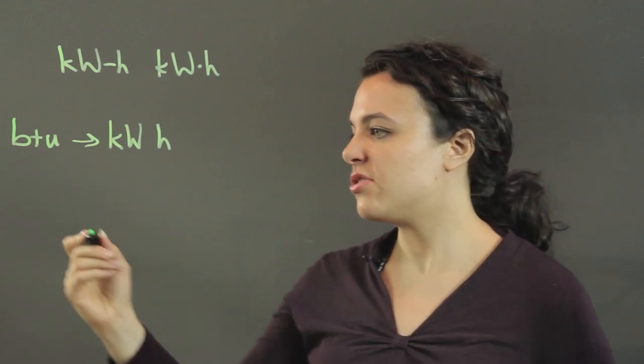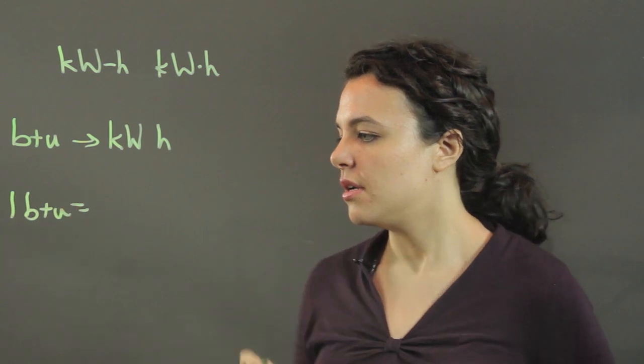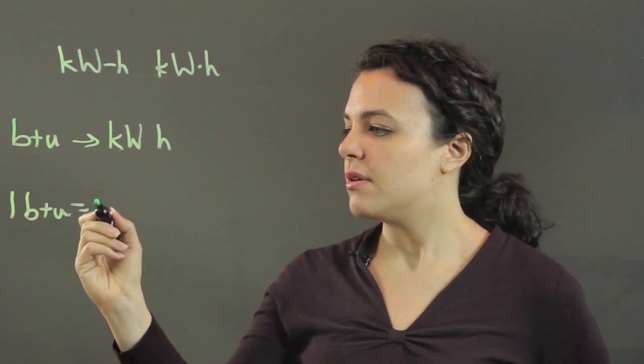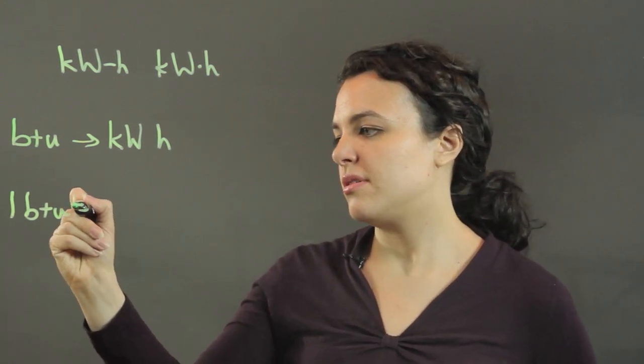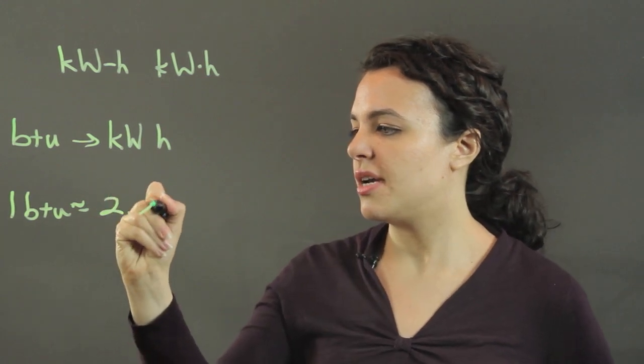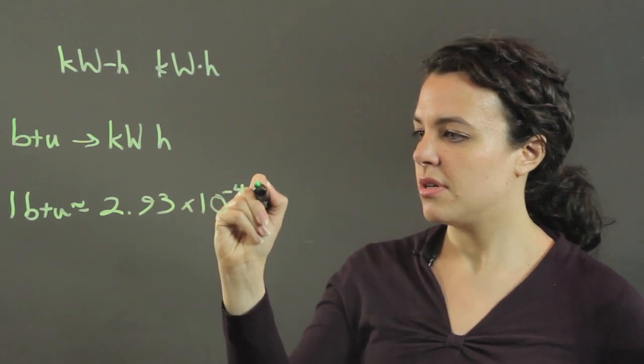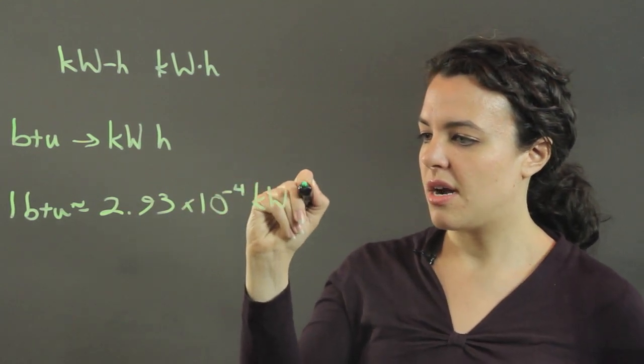So we've got two units of energy, and one British thermal unit equals roughly 2.93 times 10 to the minus 4 kilowatt hours.